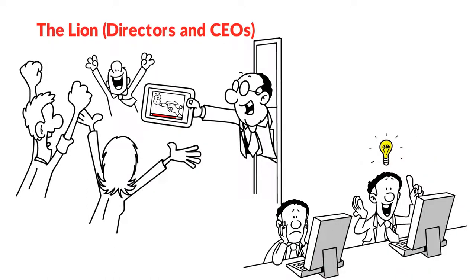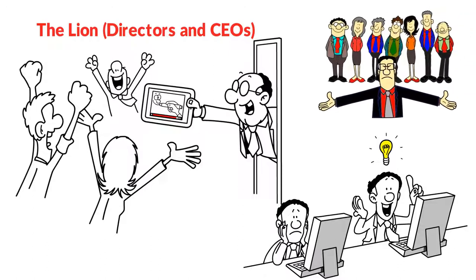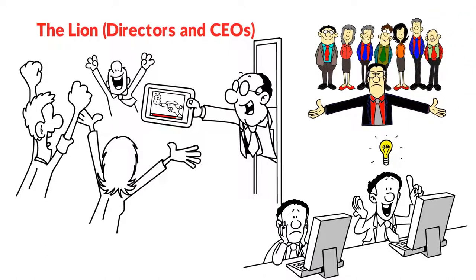Lions tend to take control of other people and situations and can be decisive in both their actions and decisions. They like to move at an extremely fast pace and are very impatient with delays. When other people can't keep up with their speed, they view them as incompetent.